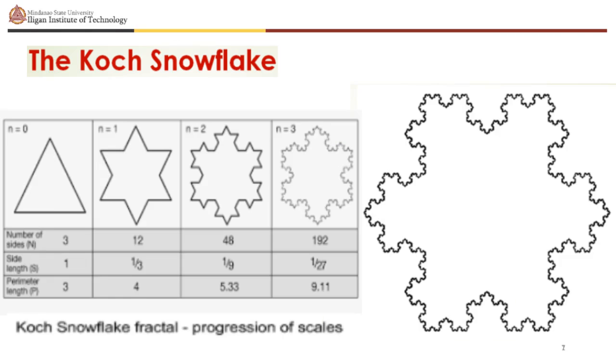The Koch snowflake first appeared in a paper published by the Swedish mathematician Niels Fabian Helge von Koch in 1906. A Koch snowflake is a fractal which can be built by starting with an equilateral triangle, removing the inner third of each side, building another equilateral triangle at the location where the side was removed, and then repeating the process indefinitely.